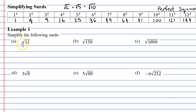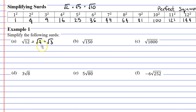Starting with question A, we have the square root of 12. I'm going to use the first concept in reverse — I'm going to split the square root of 12 into two numbers: 4 and 3. So root 4 times root 3. I'm allowed to do this because 4 times 3 is 12. One of these numbers is a perfect square — the 4.